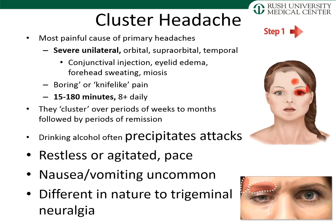Nausea and vomiting are uncommon with cluster headaches. The pain differs from trigeminal neuralgia, which presents as repetitive unilateral shooting pain in the distribution of cranial nerve 5 lasting less than one minute — very different from cluster headache, which is located around or behind the eye with a different temporal quality. Some patients with cluster headache describe the pain as so severe they want to commit suicide, so this disorder should be treated aggressively.